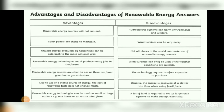Now the disadvantages. Number one: hydraulic systems can harm environments and wildlife. Number two: wind turbines can be very noisy. Number three: not all places in the world can make use of renewable energy sources. Number four: wind turbines can only be used if the weather conditions are suitable.